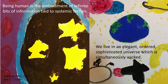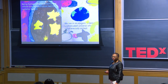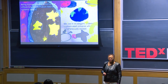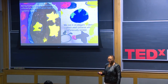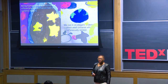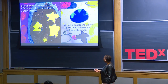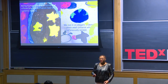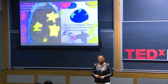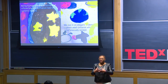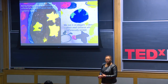Being human, in my opinion, is the embodiment of a lot of bits — whether that's our bodies, whether that's our words, bits of information. We can communicate in other ways: bodily, through emotions. They're all tied to systemic factors, and a system changes. These are interconnected elements that work with and against each other. That's what being human is.